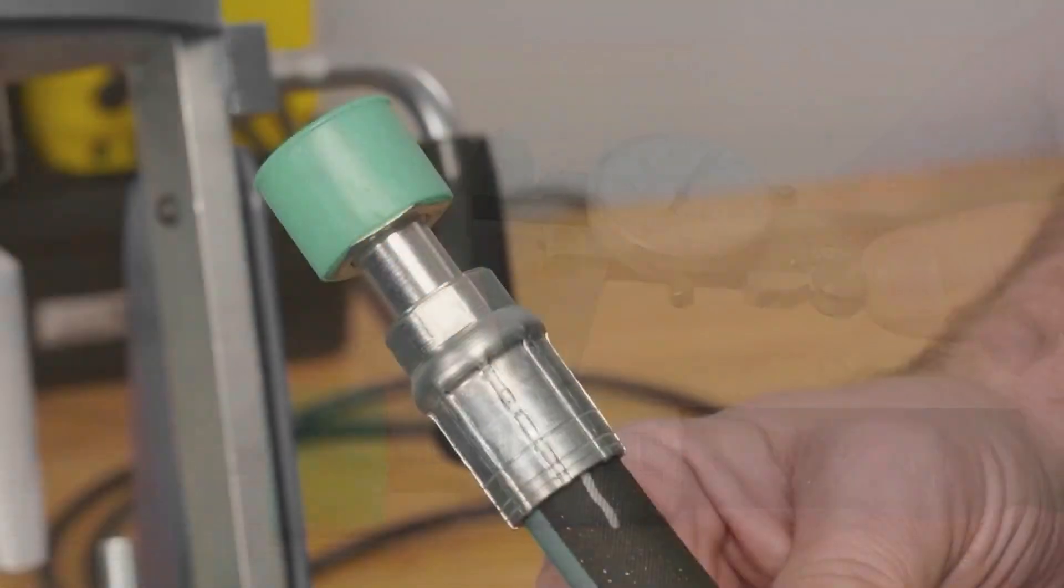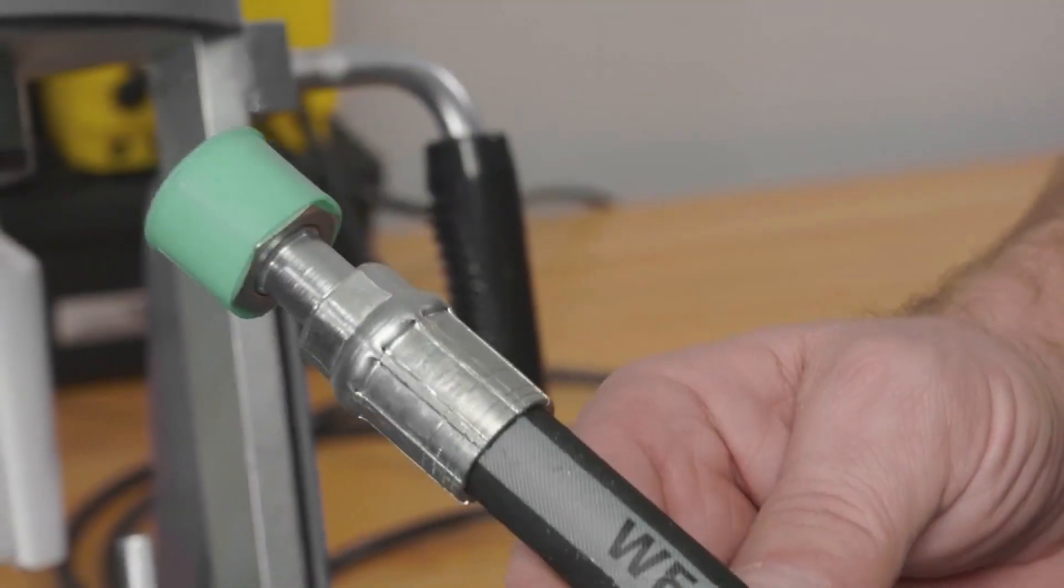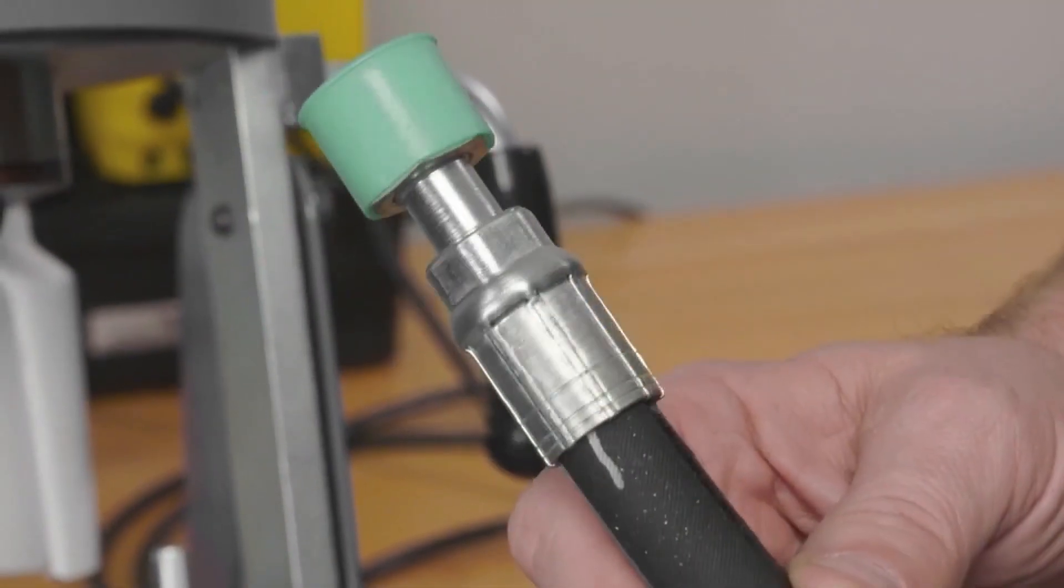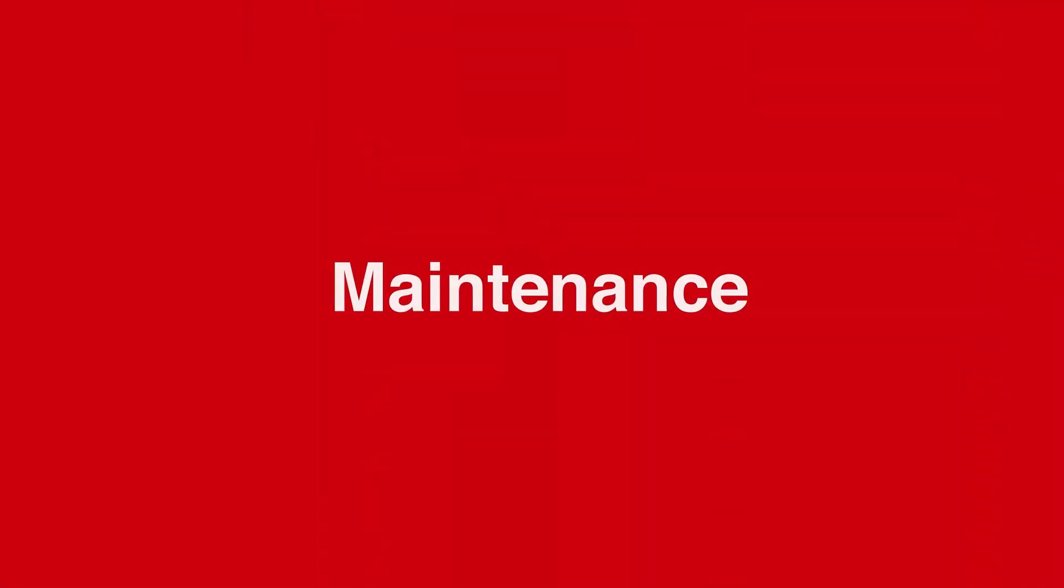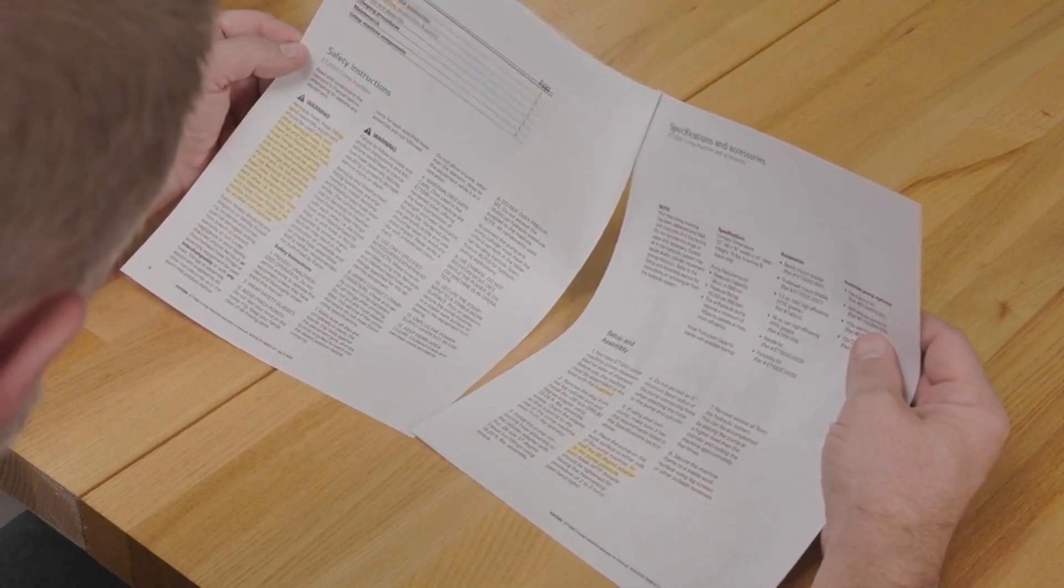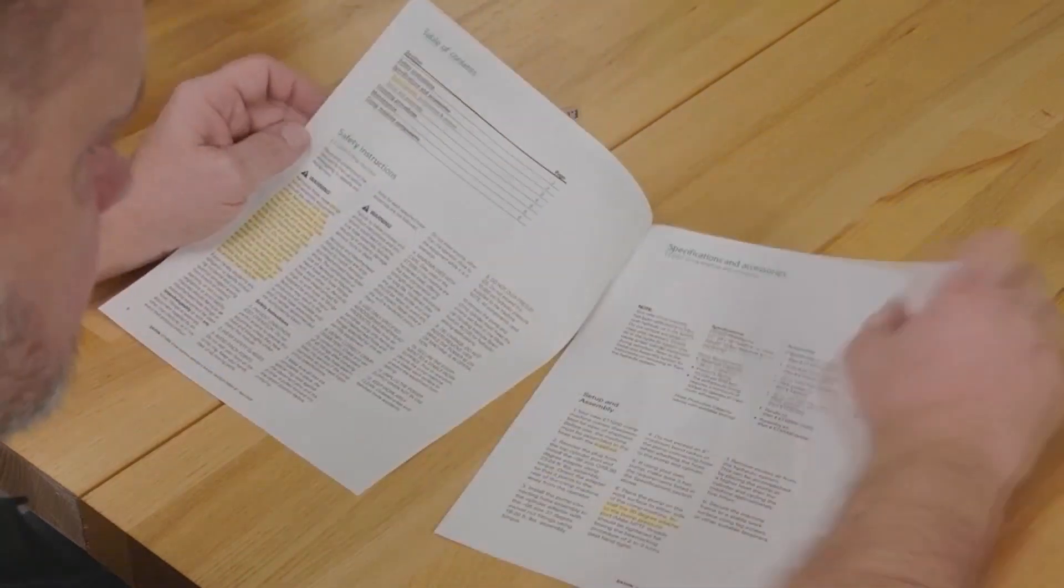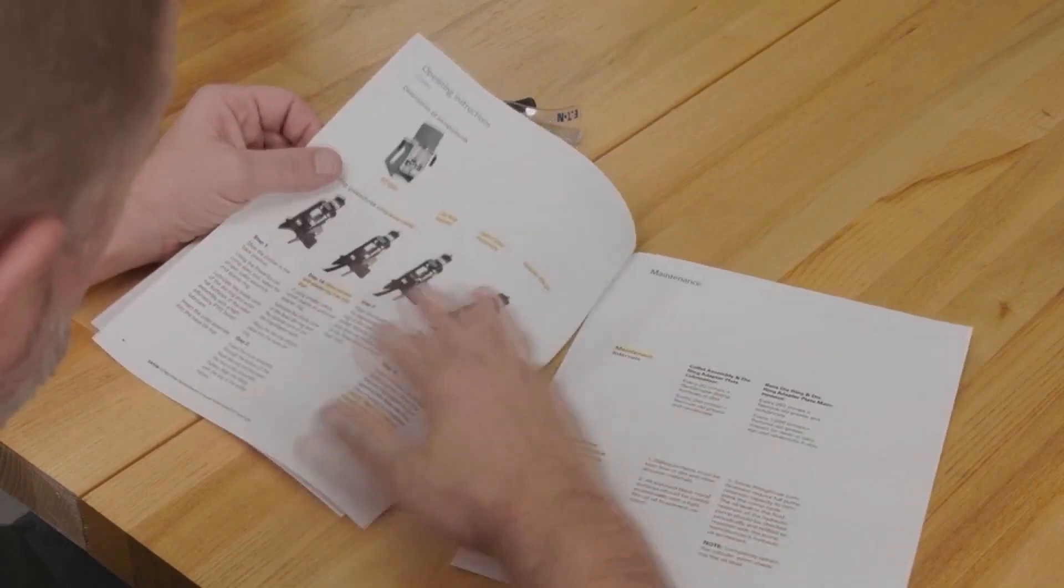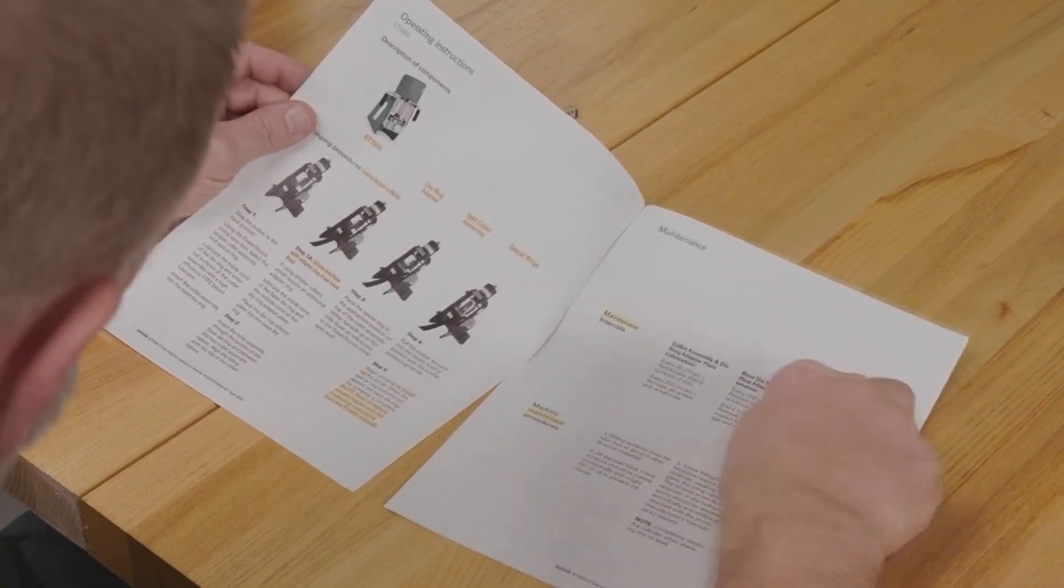And there you have it, a perfectly crimped hose assembly. It's that easy. To ensure optimal performance, please follow all outlined maintenance procedures in the operator's manual, most importantly re-lubrication of the crimp ring and periodic checking of the oil level in the hydraulic power unit.